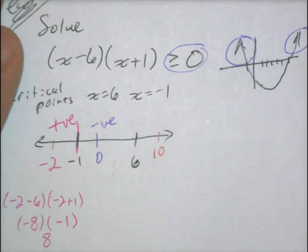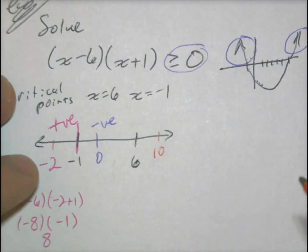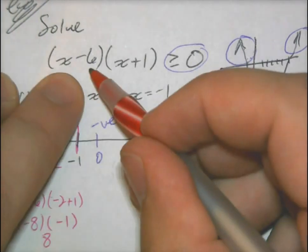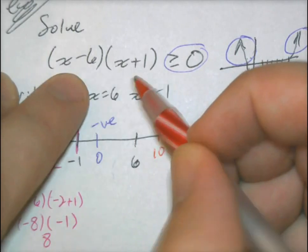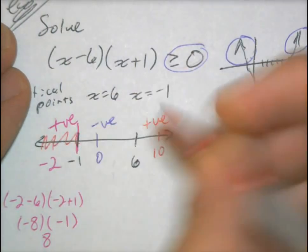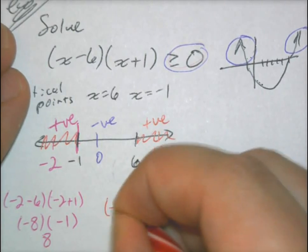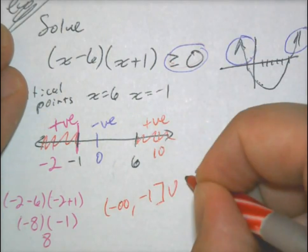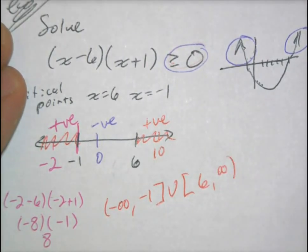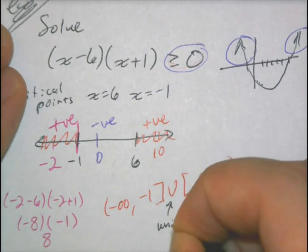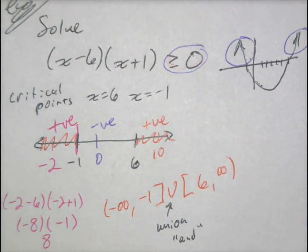Then I pick a number greater than 6, say 10. Both factors are positive, so positive times positive is always positive — that's a positive interval. Since I'm looking for things greater than or equal to zero, I want positive numbers. So I have the interval from negative infinity to negative 1 (included, because it's 'or equal to'), union 6 to infinity. The union sign just means 'and'. That's all you have to do — it will go faster the more you practice.